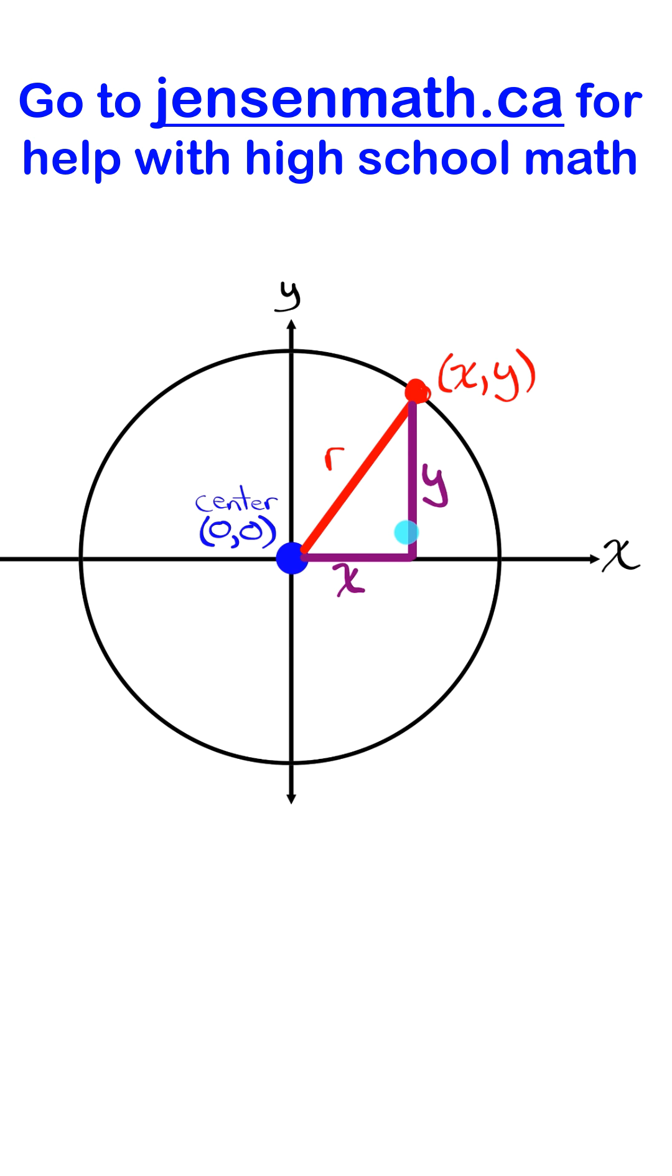And notice what I've created here is a right angle triangle. And what do we know about the relationship between the sides in a right angle triangle? The sum of the squares of the shorter two sides, so x squared plus y squared, is equal to the square of the longest side.